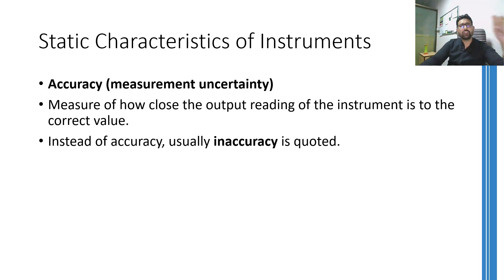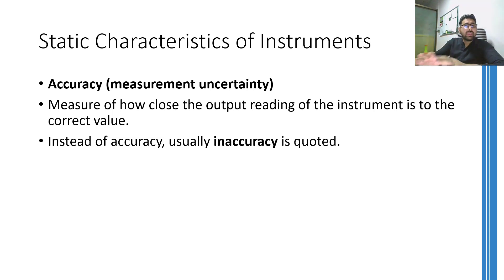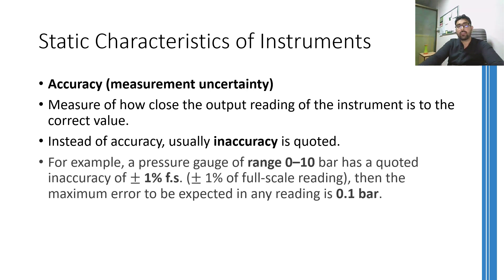Accuracy is a measure of how close the output of the instrument is to the actual true output. For example, if your true weight is 80 kg and the weighing scale you are using is giving you 78 kg, then there is an inaccuracy of 2 kg in the output. Normally, this inaccuracy is stated as a percentage of full-scale. For example, a pressure gauge having a range of 0 to 10 bars may have a quoted inaccuracy of 1% full-scale.